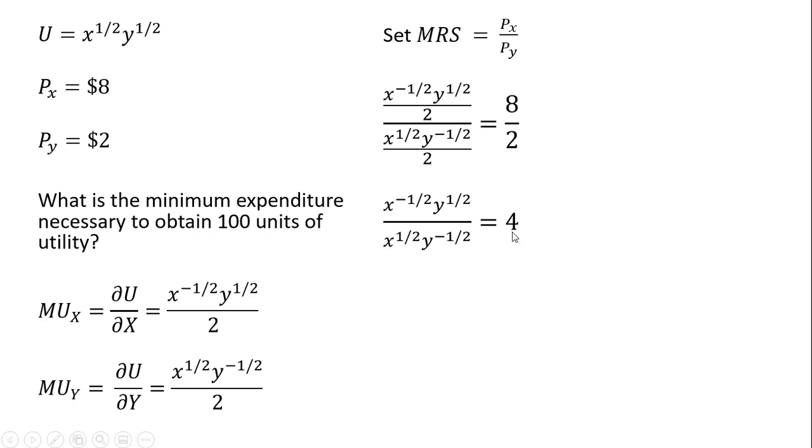So 8 divided by 2 is 4. First thing we'll notice here is these 2's cancel. And then following the rules of exponents, we're going to bring this x to the minus 1 half down into the denominator, and you'll just have x down there. And then we're going to bring this y to the minus 1 half up into the numerator, and you'll get y to the 1 half times y to the 1 half, or just y. Solving this last expression now for y, y equals 4x.